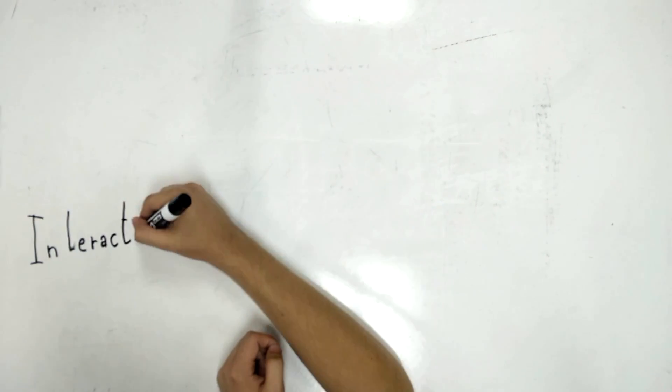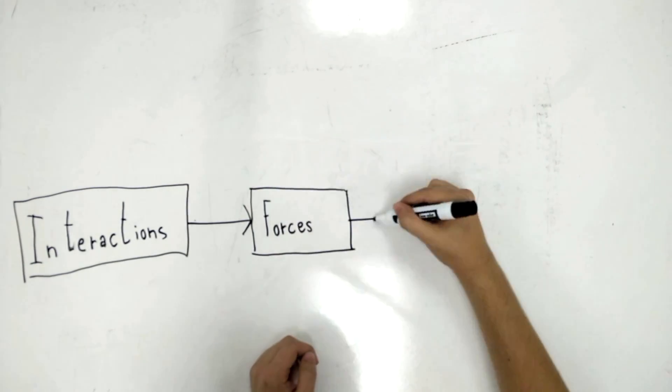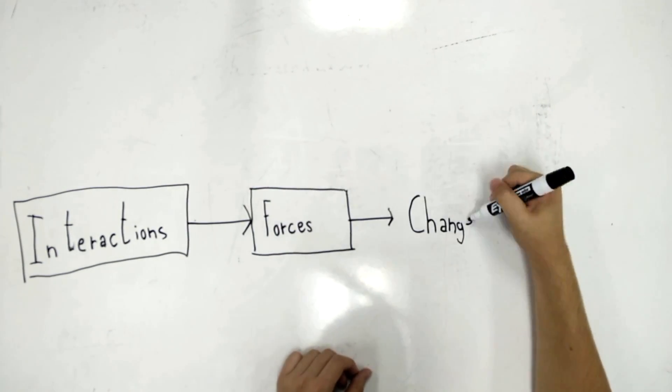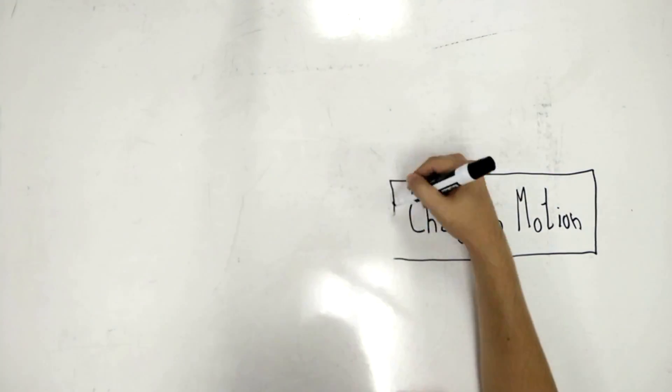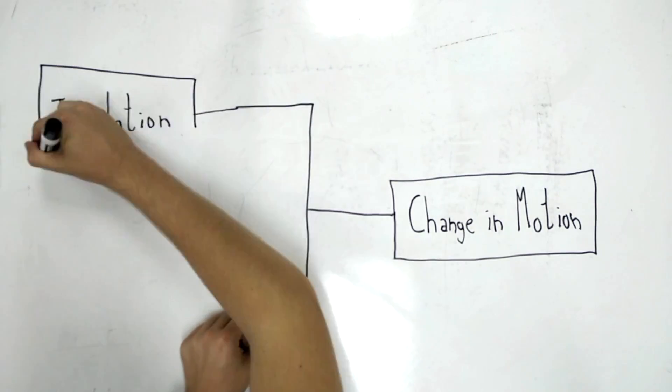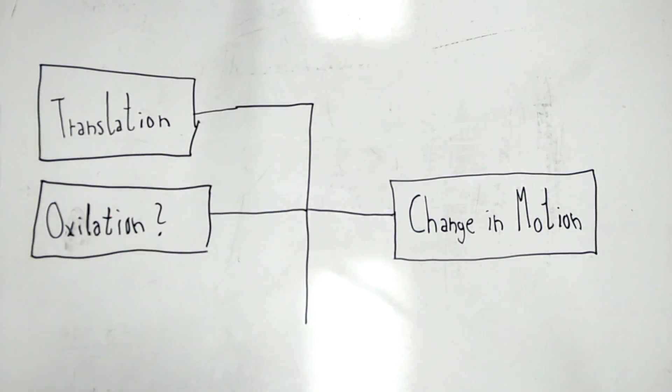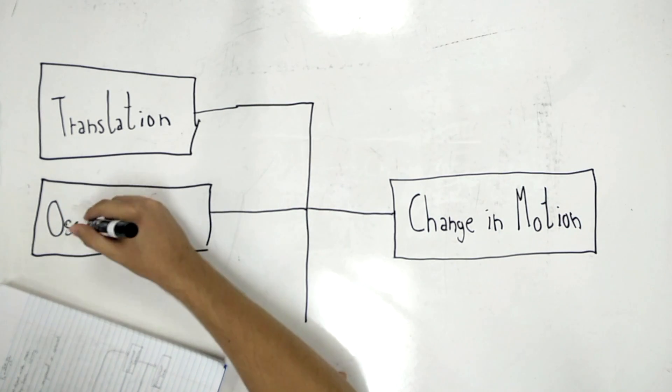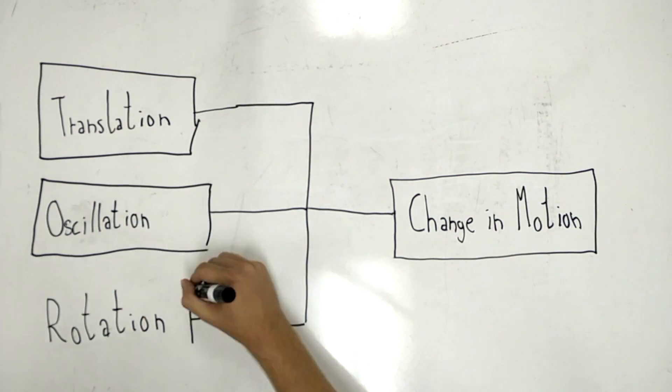So there are four types of interactions that we covered in Newtonian mechanics. These four types of interactions lead to six forces, which leads to change in motion. There are three types of change in motion. The first is translations. The second is oscillations. Lastly, they're rotations.